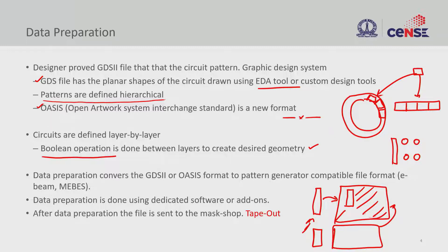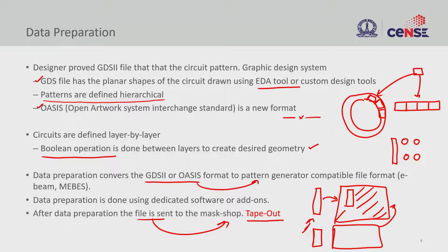The mask preparation team also converts the data format. The GDS — Graphic Design System format — is converted into a different file format required to write the mask on the pattern generator. Once data preparation is done, the file is sent to the mask shop, which will make the mask. This stage is called tape out: once you design and send all designs in the appropriate mask file format to the mask shop, that is the tape-out phase.